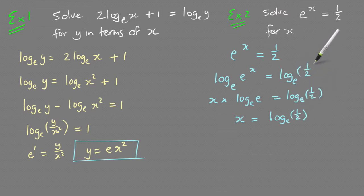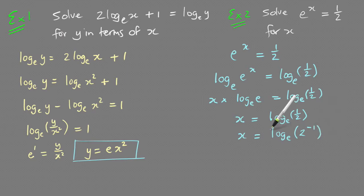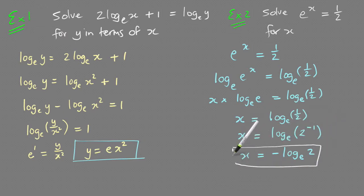To express this more cleanly, write ½ as 2^(−1), so log_e(2^(−1)), and that −1 comes out the front, giving x = −log_e(2). That is the exact value answer. If you needed decimal places you would just type it into your calculator.